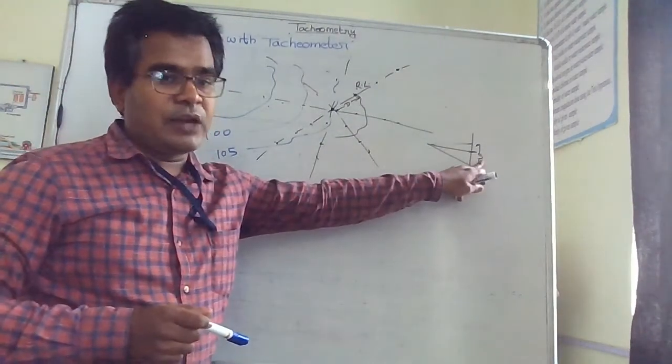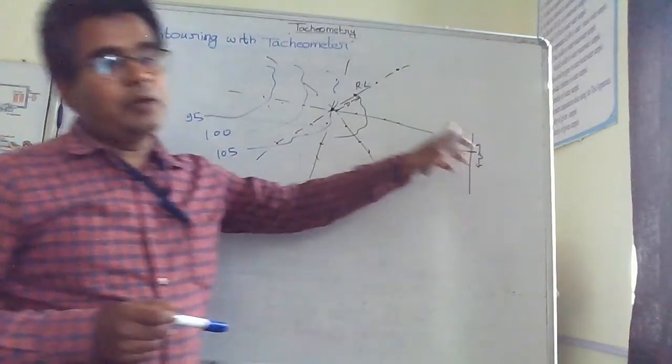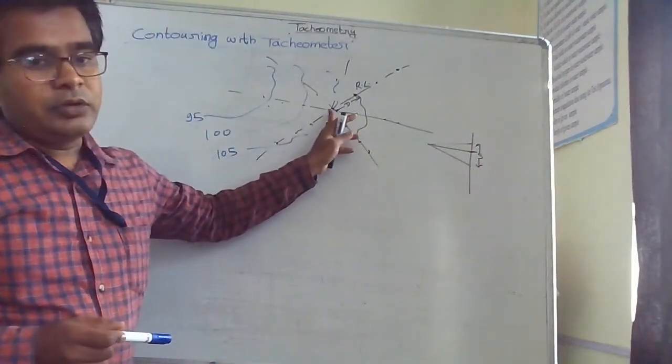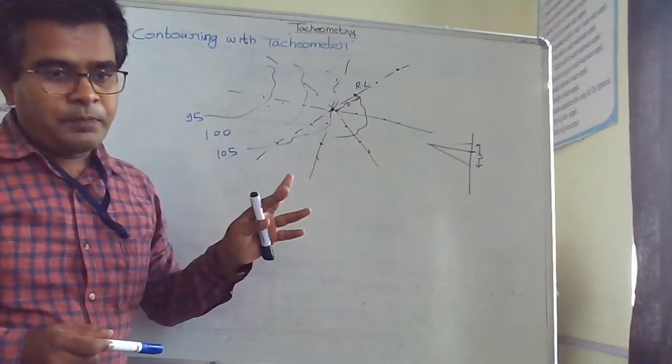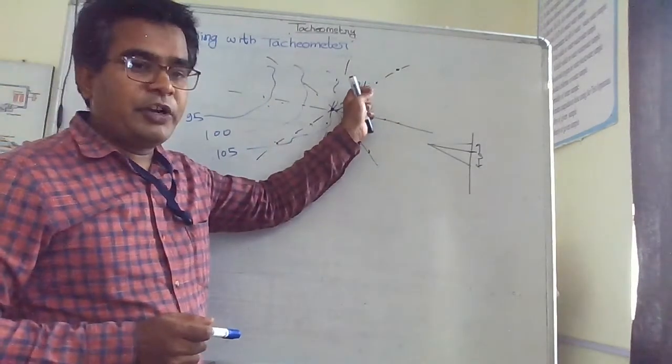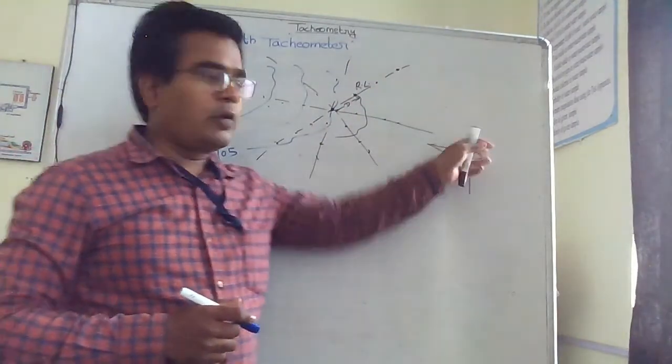By calculating the difference between upper and lower cross hair readings, we get the staff intercept. From the staff intercept, we can find the horizontal distance D of that specific point, and we can find the RL by using the angle of elevation and middle cross hair reading.